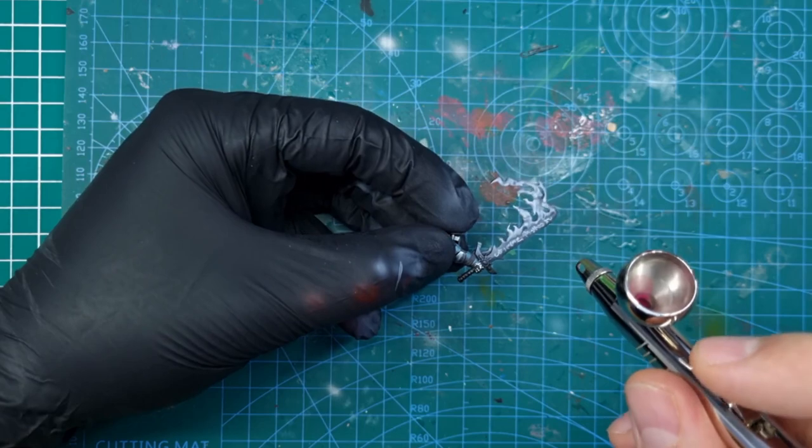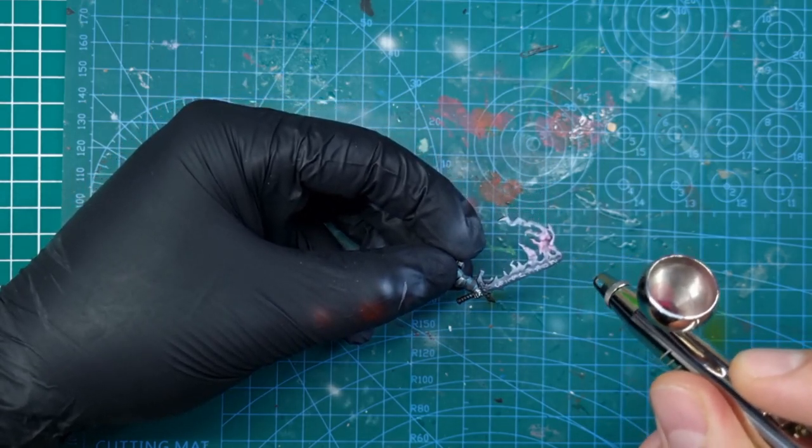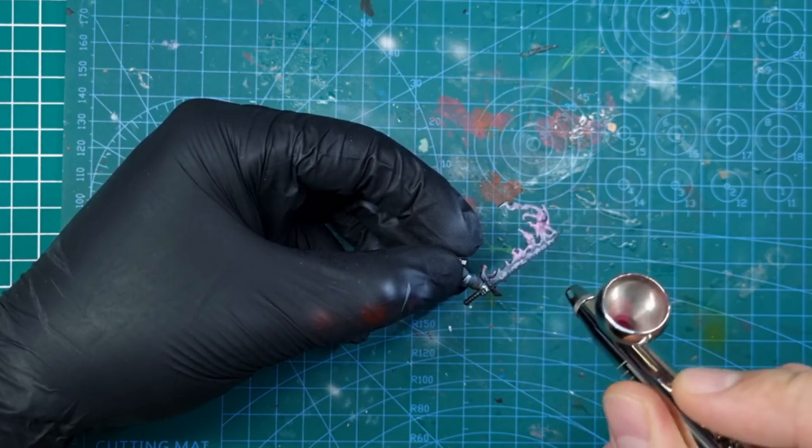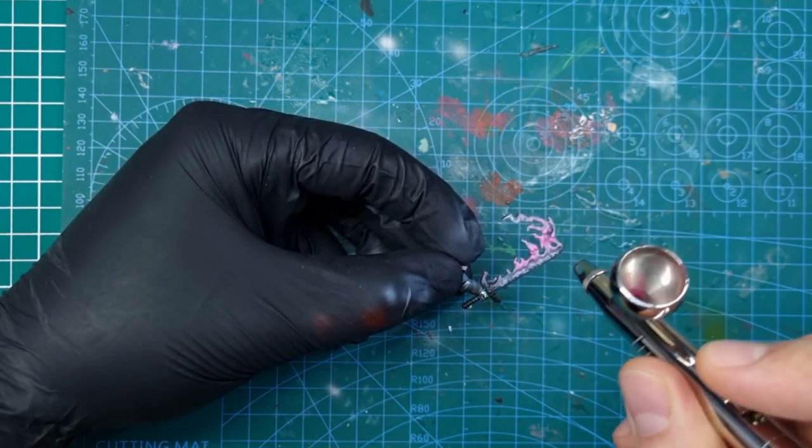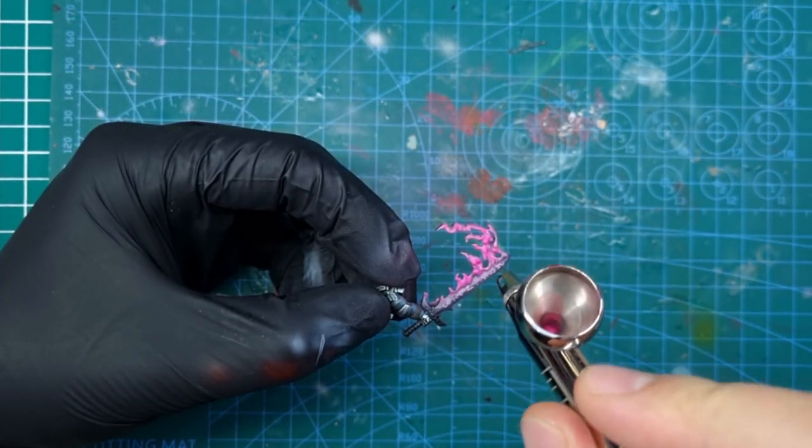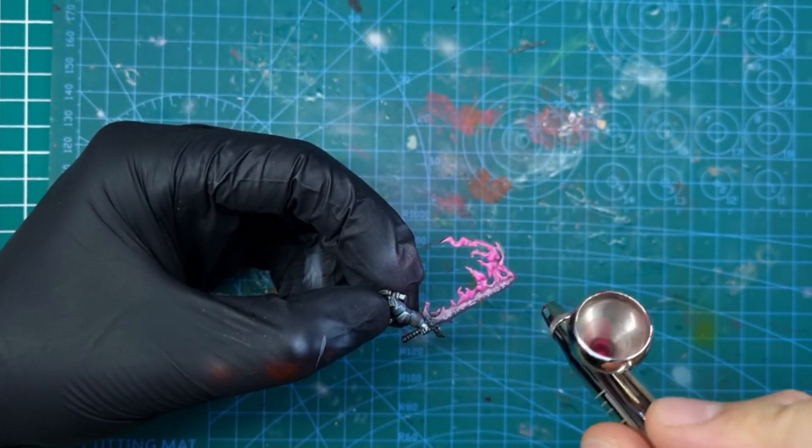After that I covered the flames with thin layers of magenta paint from Vallejo model color range, focusing more on the area near the blade. I have to be honest here, at this stage it was the first moment when I noticed the demon face is there.